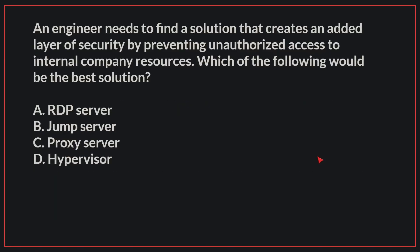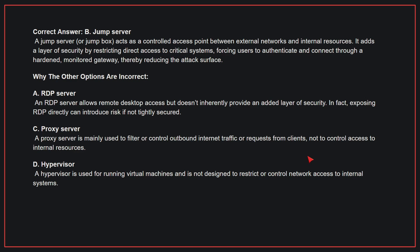An engineer needs to find a solution that creates an added layer of security by preventing unauthorized access to internal company resources. Which of the following would be the best solution? The correct answer is B: Jump server. A jump server acts as a controlled access point between external networks and internal resources. It adds a layer of security by restricting direct access to critical systems, forcing users to authenticate and connect through a hardened, monitored gateway, thereby reducing the attack surface.